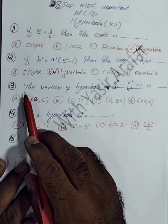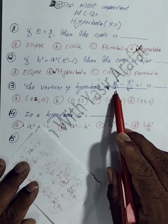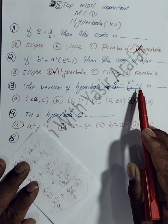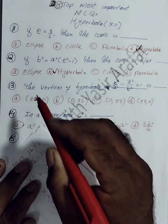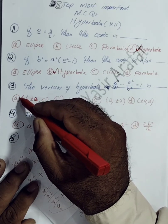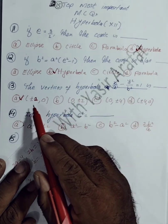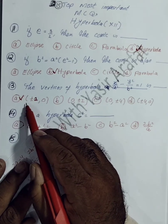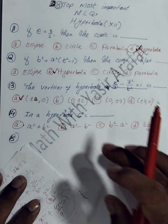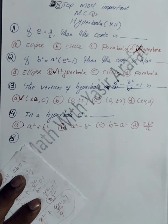The thirteenth MCQ: for the hyperbola x²/A² − y²/B² = 1, the vertices are at (±A, 0). So option A is correct for the thirteenth MCQ.